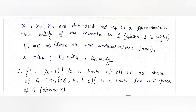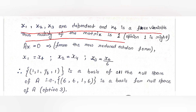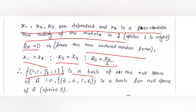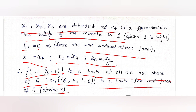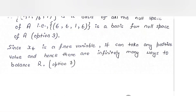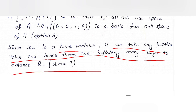From the row echelon form, x1, x2, and x3 are dependent variables and x4 is a free variable. Thus the nullity of the matrix is 1, so Option 1 is correct. From the reduced row echelon form: x1 = x4, x2 = x4, x3 = x4/6. So {6, 6, 1, 6} is a basis for the null space of A — Option 3 is true. Since x4 is a free variable that can take any positive value, there are infinitely many ways to balance the equation, confirming Option r (the last option) is also true.